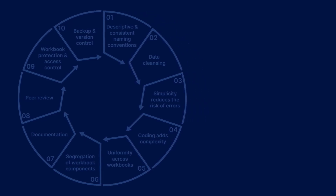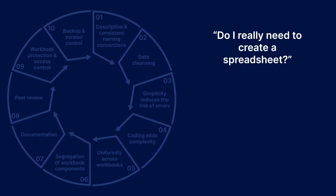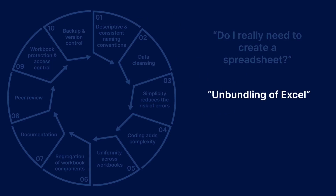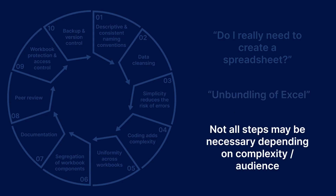Before even considering these 10 steps for best practice, stand back and ask yourself if a spreadsheet is really needed. Maybe the result would be better obtained by writing a report directly within an ERP system. Or if the spreadsheet you're trying to create is going to become a mission-critical application, consider looking at third-party software that could better control the process. Do a Google search for 'unbundling of Excel' and see how many companies have looked at what people are using Excel for and then created separate applications that are better in terms of process control. While these 10 steps do outline best practice, consider that they may not all be applicable depending on the complexity of what you're trying to achieve.